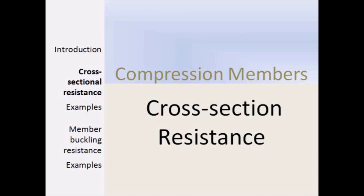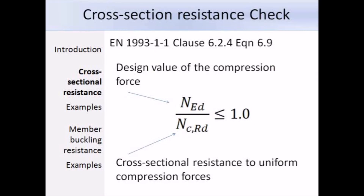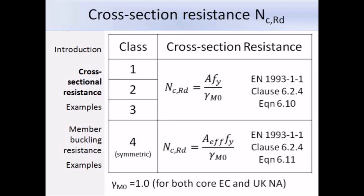This section deals with the first check: cross-section resistance, which must be carried out for both slender and stocky columns. To ensure the resistance is adequate, the following equation must be satisfied: N_Ed divided by N_CRd must be less than or equal to 1. This is expression 6.9, telling us the design compression force N_Ed must be less than the cross-section compression resistance N_CRd. The cross-section resistance depends on the cross-section classification: for class 1, 2, and 3 sections we use expression 6.10, equal to the gross area times yield strength over gamma_M0; for class 4 sections we use expression 6.11, using the effective area times yield strength over gamma_M0. Gamma_M0 is equal to 1 for both the core European document and the UK National Annex.